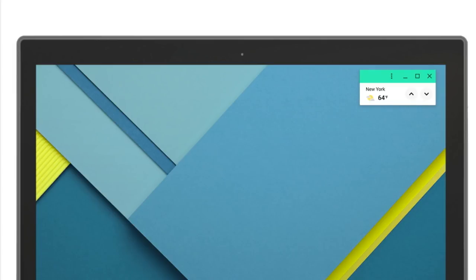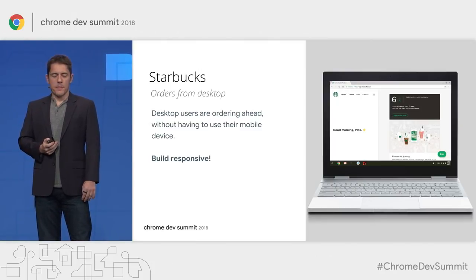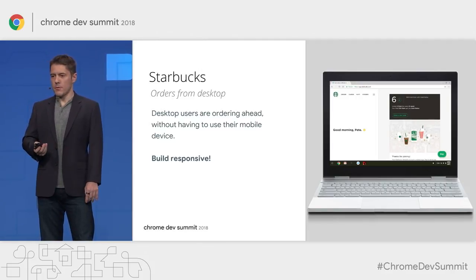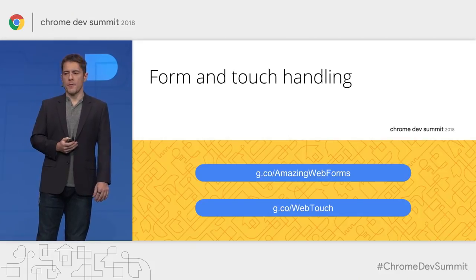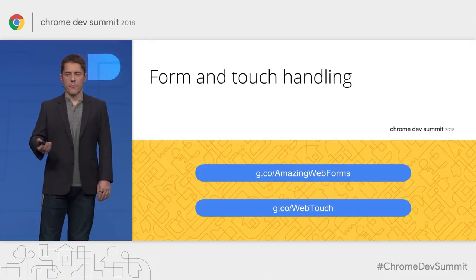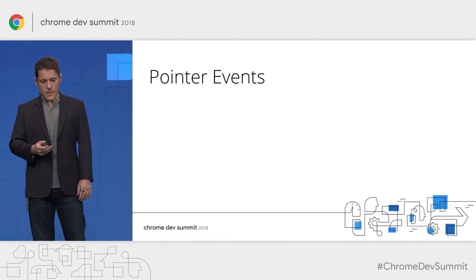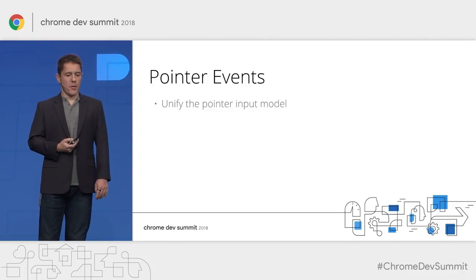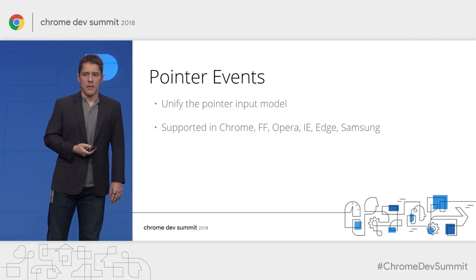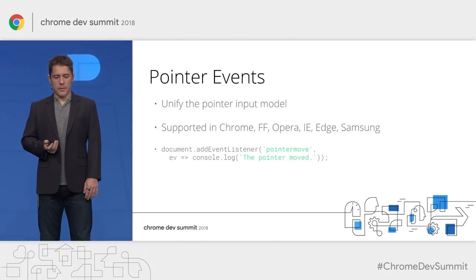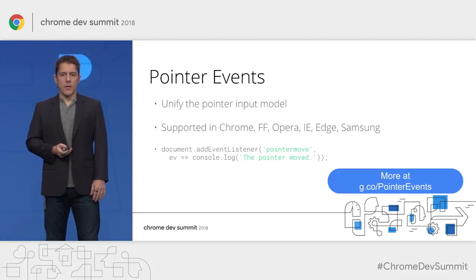For a media player, you can have previous and next controls. It also pays off to optimize your forms — see guidance at g.co/amazingwebforms, and handle touch at g.co/webtouch. There are also Pointer Events, a unifying model for all pointer input: touch, trackpad, mouse, and stylus. Supported in Chrome, Firefox, Opera, Edge, and Samsung — events include pointermove, pointerenter, pointerdown, pointerup, cancel, leave, and more. See g.co/pointerevents. You can check the pointer type in code to distinguish between mouse, touch, pen, or unsupported types.